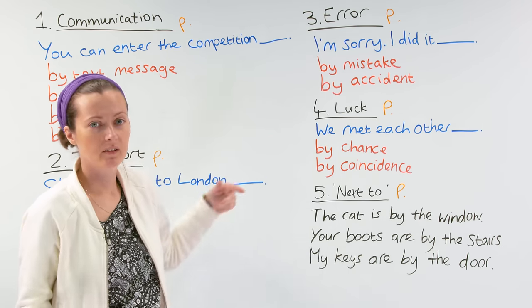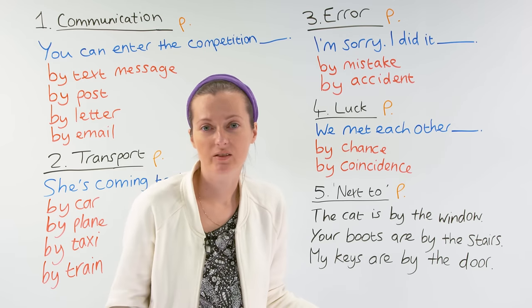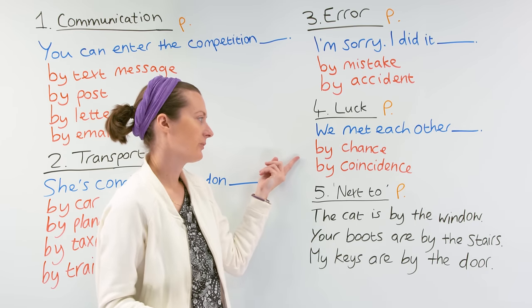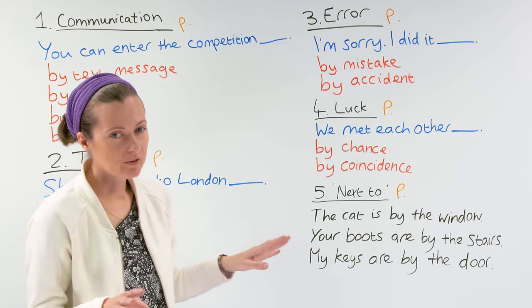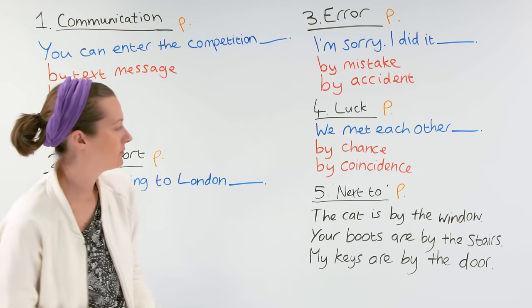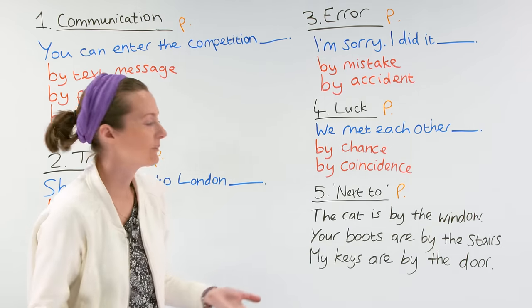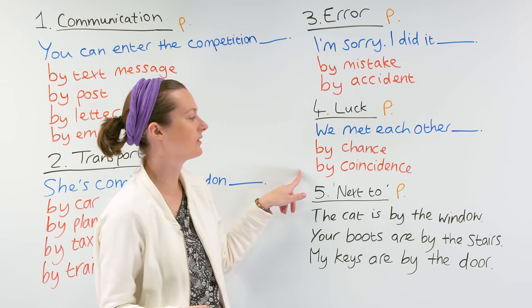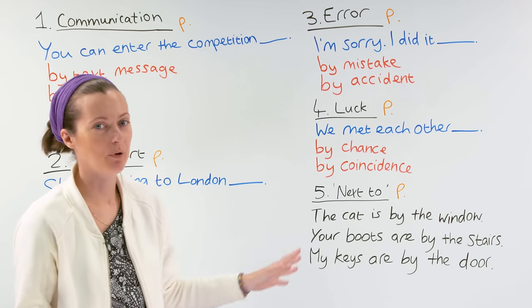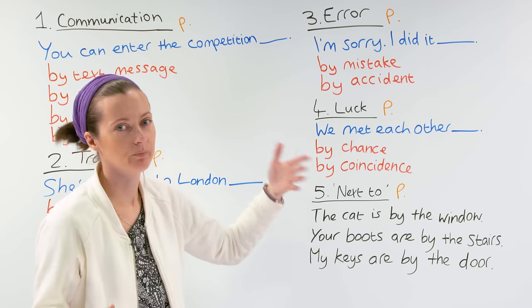Next one is luck. We met each other by chance — I didn't plan to meet you today. I'm walking down the street and there you are. This means the same thing as by coincidence: we met each other by coincidence. Also similar to the meaning of fate. When people talk about coincidence, they mean something random that just happened, whereas fate implies it was planned to be, by the gods or something like that.